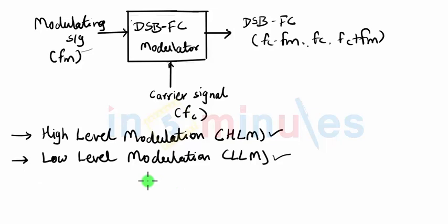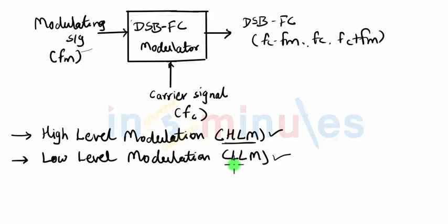So there will be a series of power amplifiers after the modulation stage, and once the double sideband full carrier signal is thoroughly power amplified, it will be transmitted through the antenna. The very important difference between LLM and HLM transmitters is that power amplifiers appear before the modulation stage in HLM, and after the modulation stage in LLM. Let us now look at the detailed block diagram of both high level modulation and low level modulation.